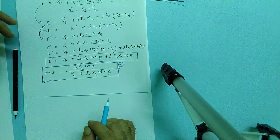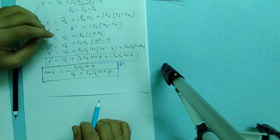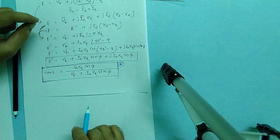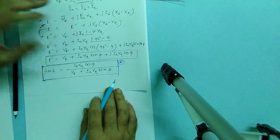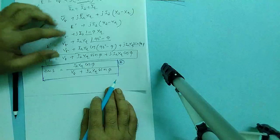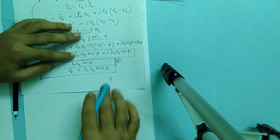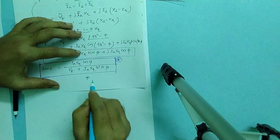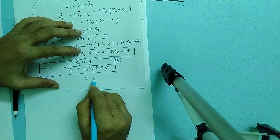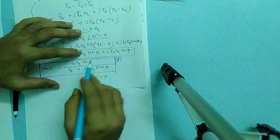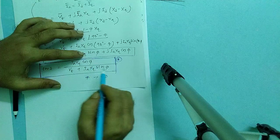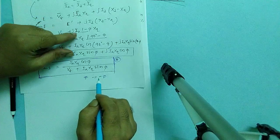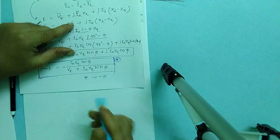What will be the value of tan of delta for leading load? You can get the value of tan del if you put just in place of phi, just minus phi. Just replace the phi with minus phi, then you will get the value of delta in case of leading power factor.